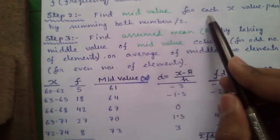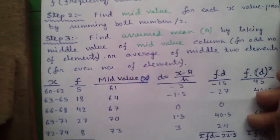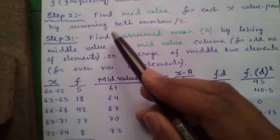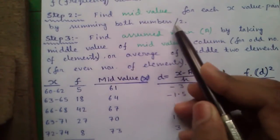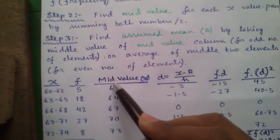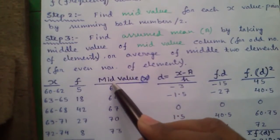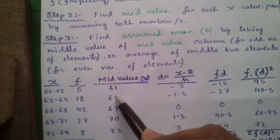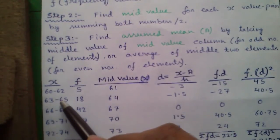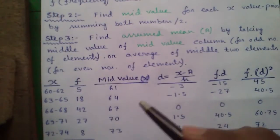Step 2: Find out the mid value for each x value pair by summing both the numbers divided by 2. So our first mid value is 62 plus 60 divided by 2 which is 61. Similarly next mid value is 63 plus 65 divided by 2 is 64 and so on.